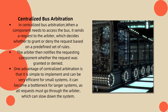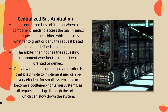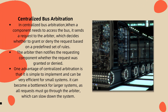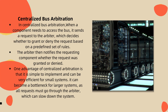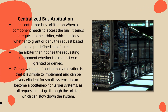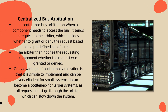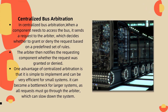My name is Nakul Kohad, roll number 42. In centralized bus arbitration, when a component needs to access the bus, it sends a request to the arbiter, which decides whether to grant or deny the request based on a predefined set of rules. The arbiter then notifies the requesting component whether the request was granted or denied. One advantage of centralized bus arbitration is that it is very simple to implement and can be efficient for small systems. However, it becomes a bottleneck for larger systems as all requests must go through the arbiter, which slows down the system.